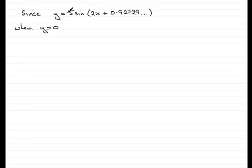Well, 5 can't be 0, so it must be that the sine of the bracket 2x plus 0.92729 and so on has got to equal 0. So to get to this angle, we need to inverse sine both sides. So we've got 2x plus 0.92729 and so on is going to equal the inverse sine of 0.